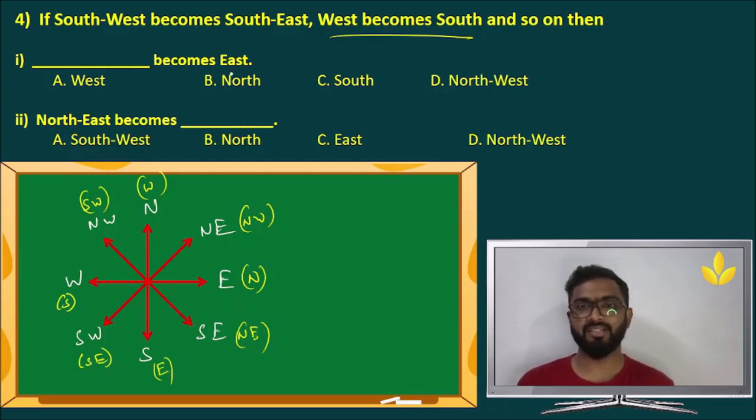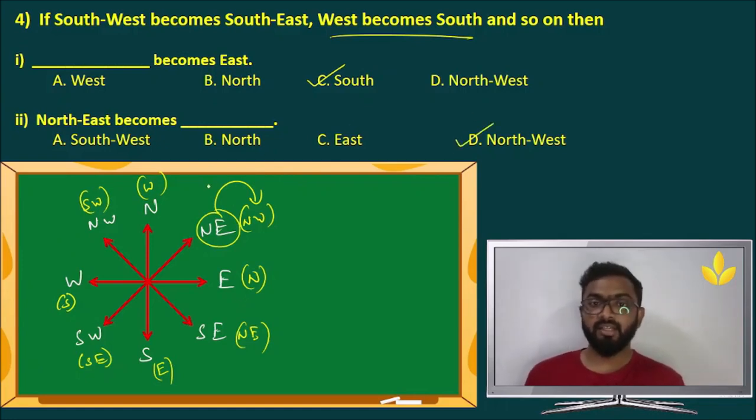Now, let's solve the questions. Question number one. Dash becomes east. What becomes east? So it's always like this. White becomes yellow. This thing becomes yellow. Not the other way around. They have told dash becomes east. We have south which becomes east. Answer is C. South becomes east. Done with the first one. Now, the second one. Northeast becomes what? Northeast becomes what? So we have northeast over here. It becomes northwest. Answer is D. The only mistake that people can make over here is they might read the question in the opposite direction and they might get another answer. But be careful about the direction. What is given? What is not given?